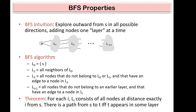L2 consists of all nodes that do not belong to L0 or L1 but have an edge to a node in L1. There must be at least one edge from L1 to L2, because when we explore a node in L1 we reach this node. We only enqueue a node once — if a node has already been in the queue or visited, we will not insert or visit it again.